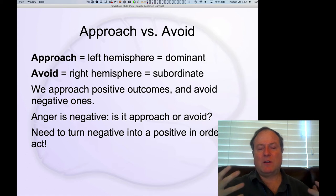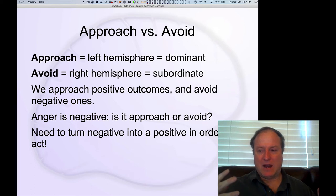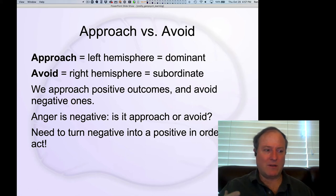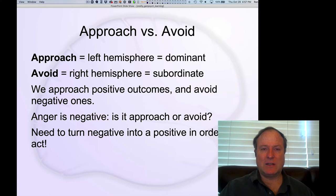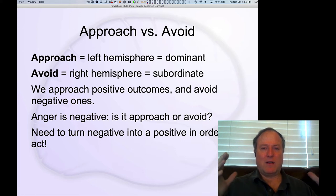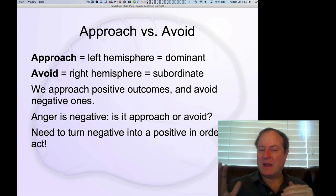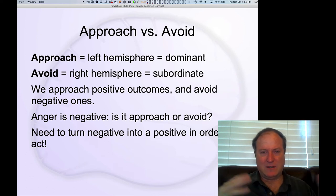Approach goals are much more closely tied to action. I want some positive thing, and I devise a plan to go achieve and obtain that thing — like going to the grocery store to get a particular food item. Avoidance goals are more complicated; it's harder to turn them into action. And yet if you really want to actively avoid something, you need to turn that negative outcome into a positive action. There is a kind of further indirection in the case of these avoidance goals.